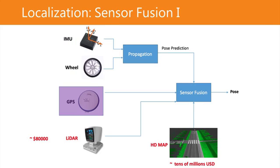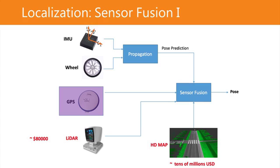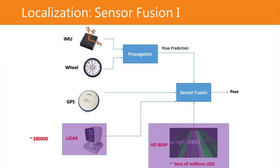Once we have this propagation update, GPS comes in to correct any errors. The purpose of GPS is to bound your localization error. If your GPS accuracy is 2m by 2m, once you exceed that bound the GPS will flag that your error is too big and you should correct your location. If your GPS provides centimeter-level accuracy, the error bound would be much smaller. On top of that, we can use LiDAR and HD map, which provides very accurate localization accuracy. Since the HD map has a lot of semantic information — such as where exactly you are, what traffic signs and traffic lights are present — it gives you more information for localization.